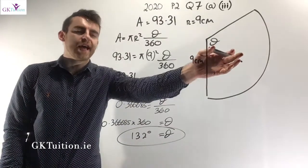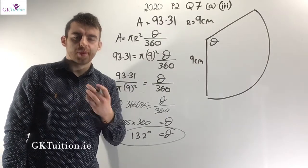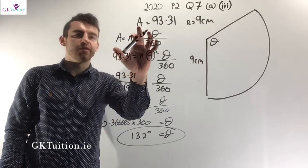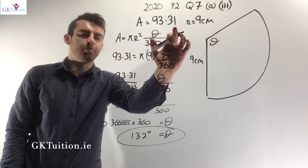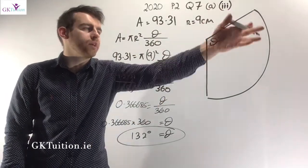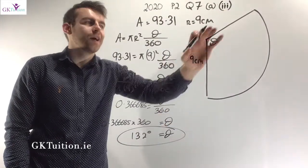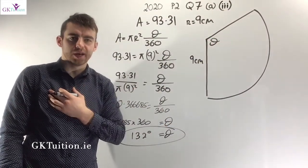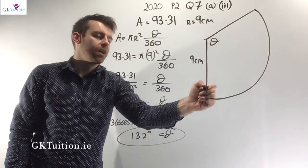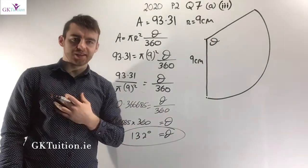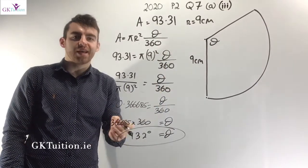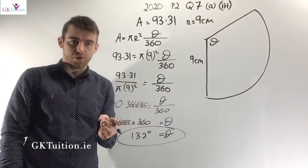In part 3 we're given the net of the cone. In part 2 we worked out the curved surface area is 93.31 cm squared, and now we've been given that curved surface area as a 2D shape. We can clearly see the radius of this net is 9 centimetres — the radius of the net shape is the same as the slant height of the cone.